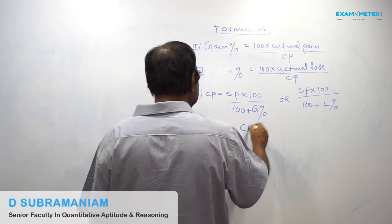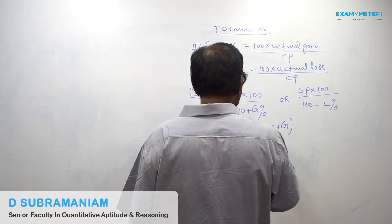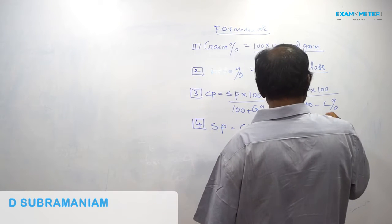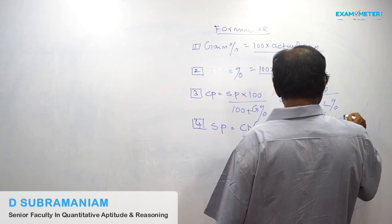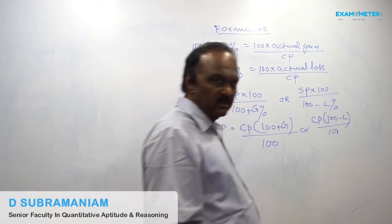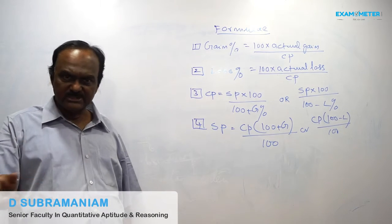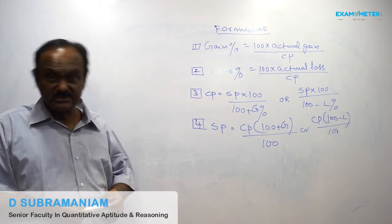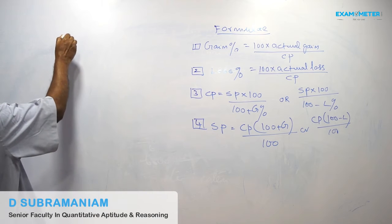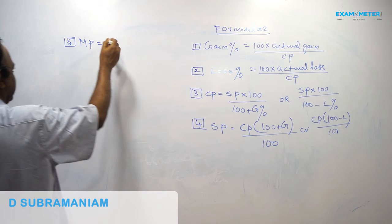Fourth Formula: Selling Price is equal to Cost Price multiplied by (100 plus Gain Percent) or (100 minus Loss Percent), divided by 100. That is, SP = CP × (100 ± G/L%) / 100.